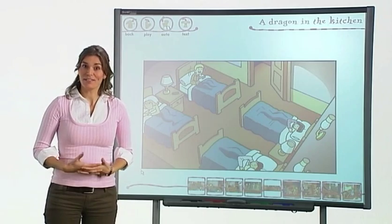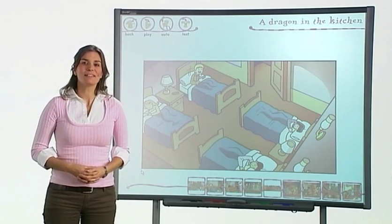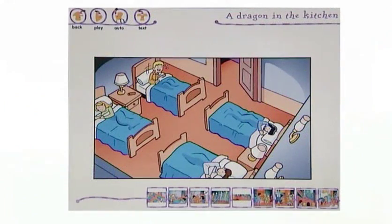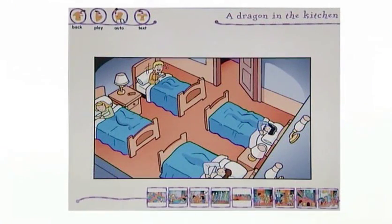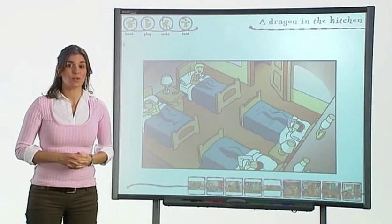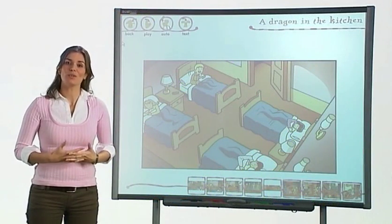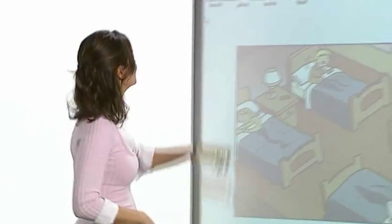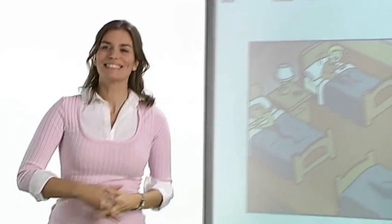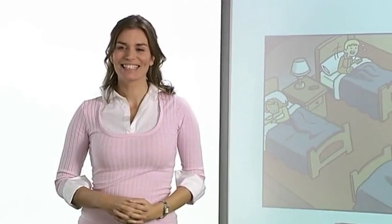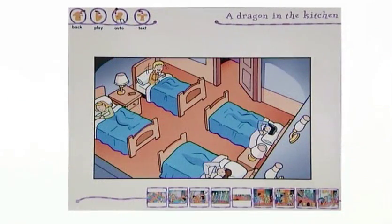The format of the activities is repeated and quickly becomes familiar and easily recognisable. We can either see and listen to the whole story by selecting auto in the main menu. For example: 'A dragon in the kitchen. It's Friday night. The children are in bed and the house is very quiet. Then suddenly…'